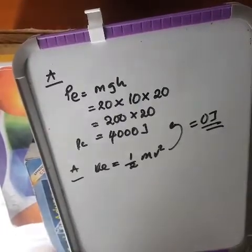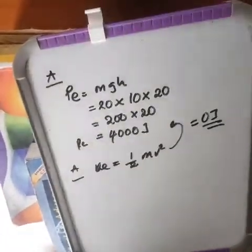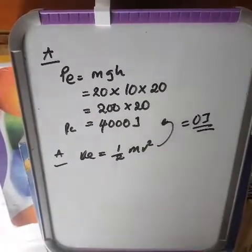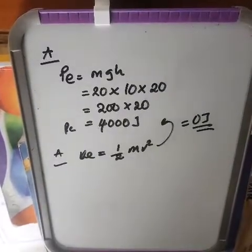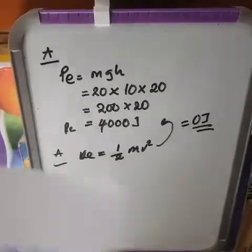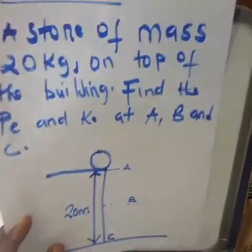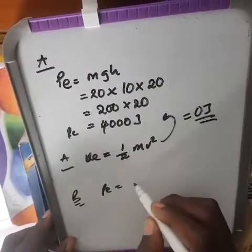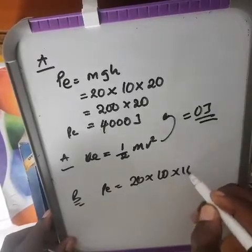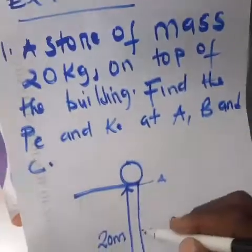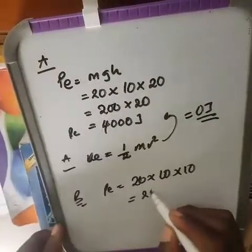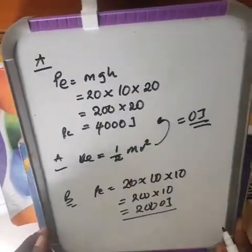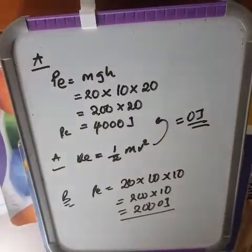Whenever potential energy is maximum, kinetic energy is zero — there cannot be kinetic energy when potential energy is at its maximum. At point B, the height is half of 20, which is 10 meters. So potential energy at B = m × g × h = 200 × 10 = 2,000 joules. At this point, kinetic energy and potential energy are equal.